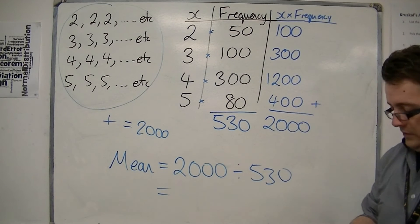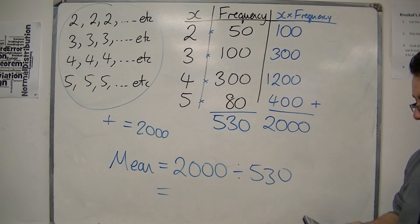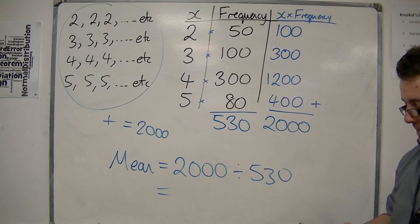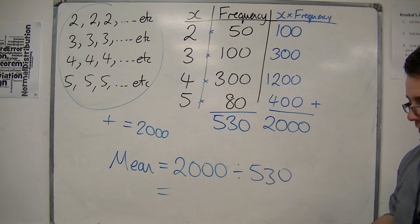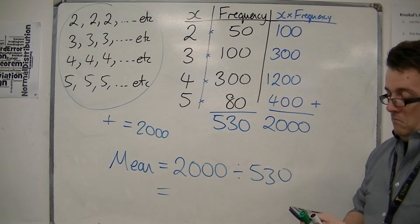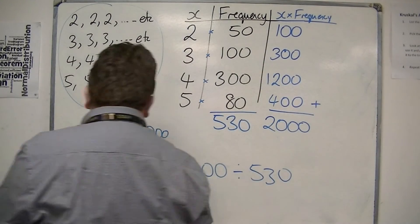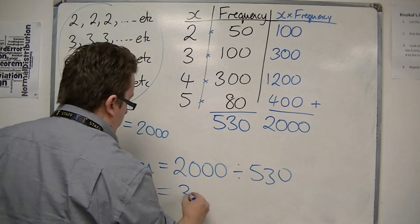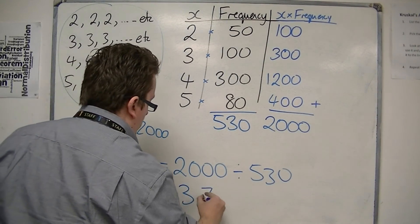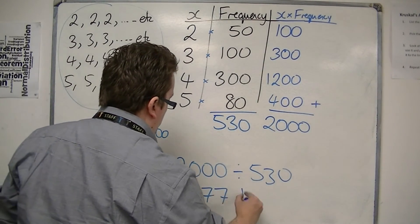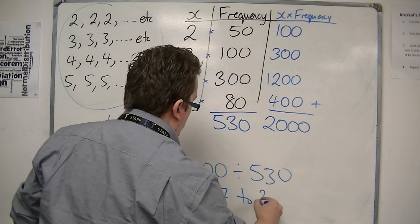Two thousand divided by five hundred and thirty is three point seven seven to two decimal places.